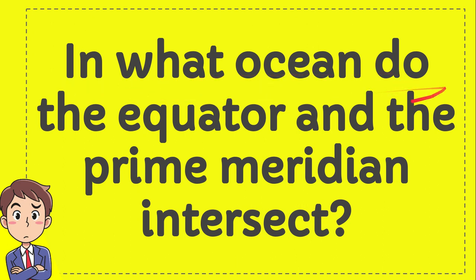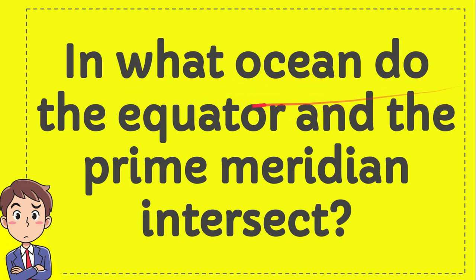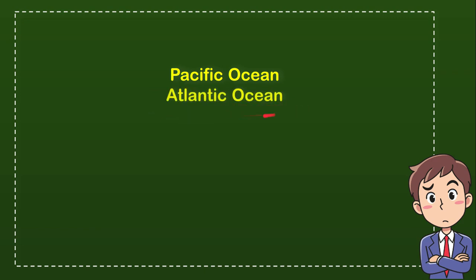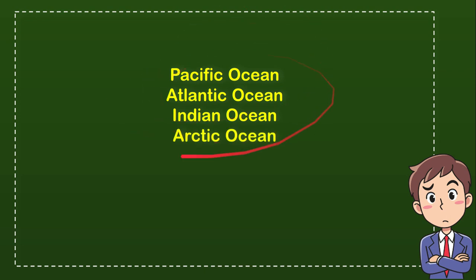In what ocean do the equator and the prime meridian intersect? I'll give you four options — you try to guess which one is the correct answer. Here is the list of options: the first option is Pacific Ocean, the second option is Atlantic Ocean, the third option is Indian Ocean, and the last option is Arctic Ocean. From these four options, which one do you think is the correct answer?